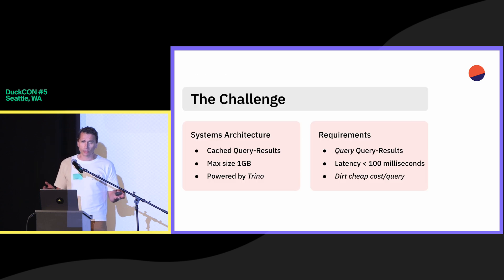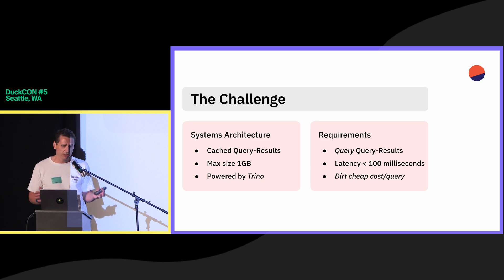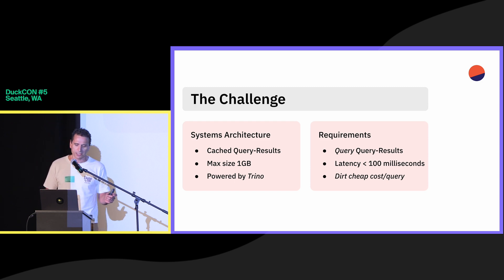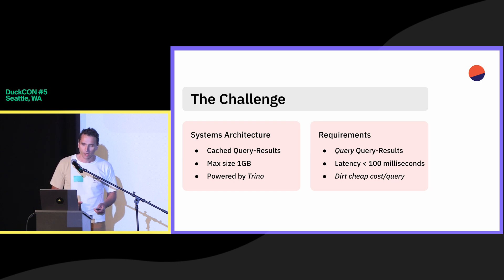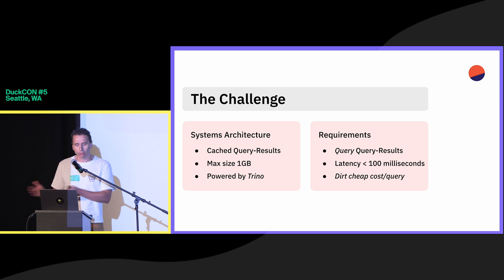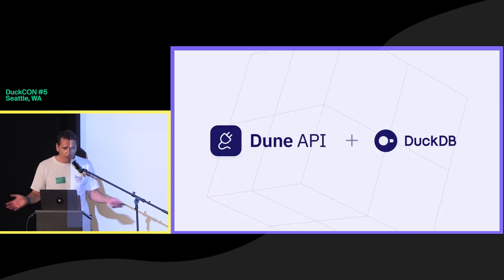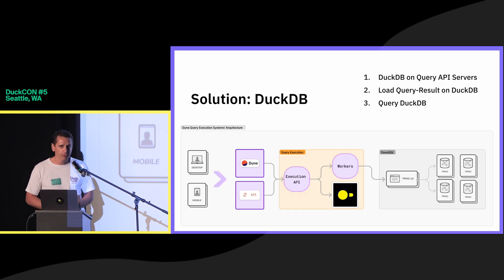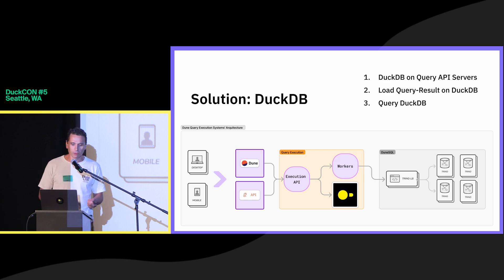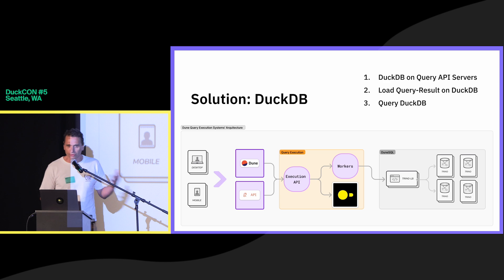Our challenge was our architecture. We basically had cached query results that were a fixed size in JSON, and the query engine is a slow big beast called Trino. We needed to query the query results with very low latency for these use cases, and it had to be really inexpensive and fast. Of course, the solution is DuckDB. What we do is run DuckDB on our API servers, load the query result onto DuckDB, and simply query DuckDB. Problem solved.